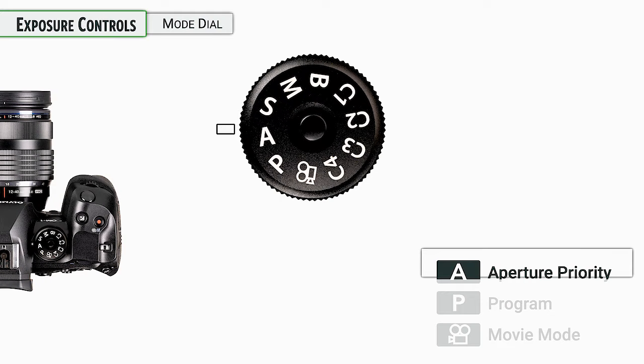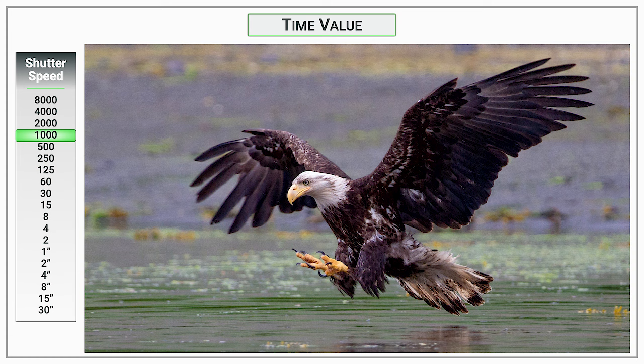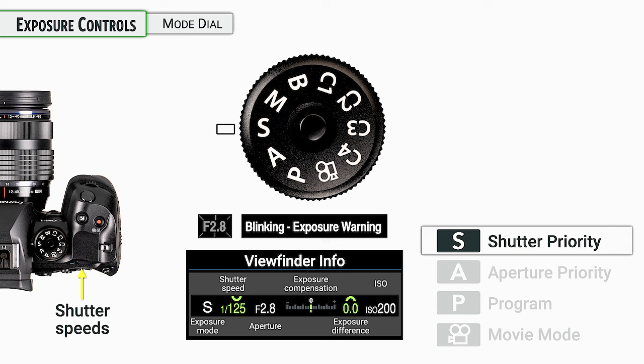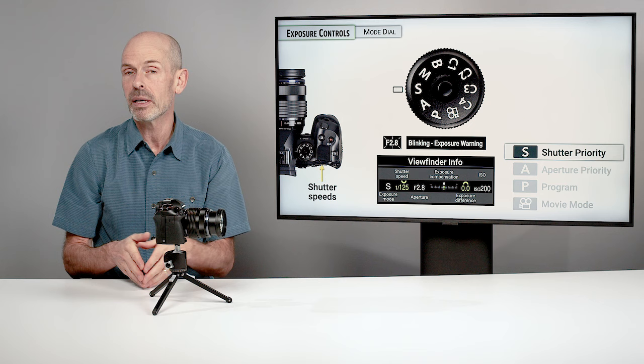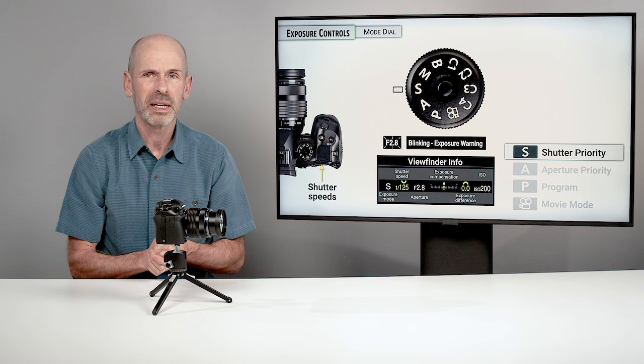Next up is shutter priority — the opposite of aperture priority. You get to choose the shutter speed. If you want a really fast shutter speed to stop fast motion, you might need 1/500 or even faster. If you want to show movement, you might go down to a one-second shutter speed for showing a river in motion. One thing to be aware of: it's easy to select a shutter speed that your camera doesn't have an acceptable aperture for, and in that case the camera will blink at you as a warning.